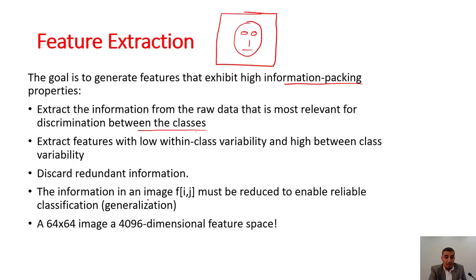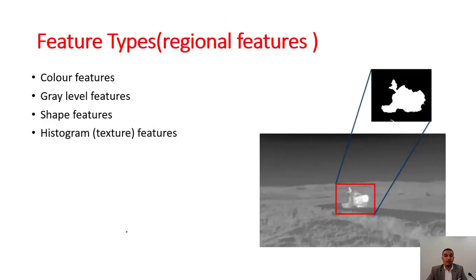Information in an image f[i,j] must be reduced to enable reliable classification. A 64 by 64 image contains 4096 dimensions, which is a very big feature space.